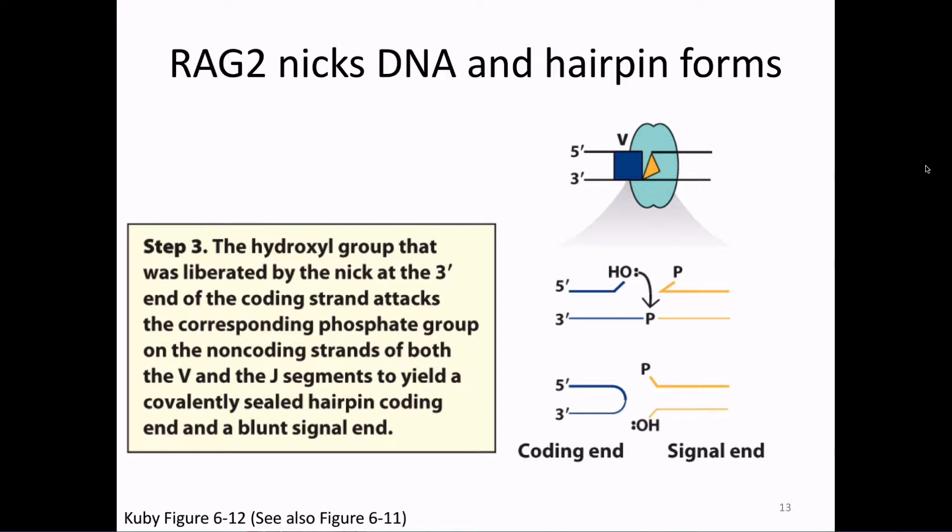Now we have two pieces of DNA: a coding end and a signal end. We also need to be aware that this is happening simultaneously to some J segment, so we actually have four DNA ends right now that have to get taken care of — two coding ends and two signal ends.